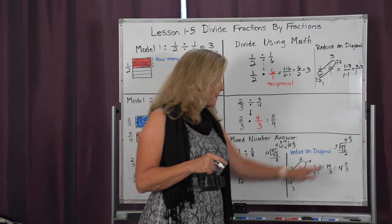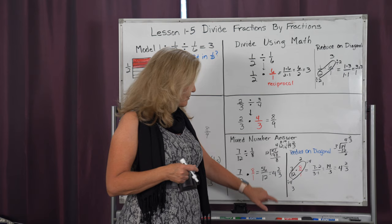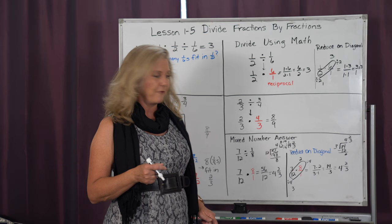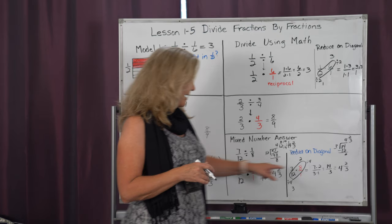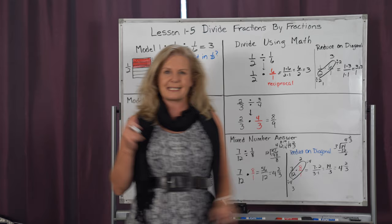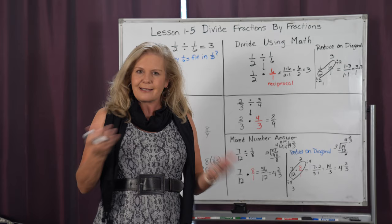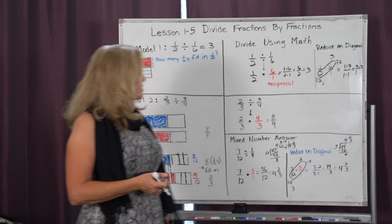If I took that same problem but this time reduced on the diagonal, I can divide both eight and twelve by four, giving me a new numerator and denominator. Now I'm just doing seven times two is fourteen, three times one is three — much smaller numbers. Three goes into fourteen four times with two-thirds left over. Same answer! That's the beauty of math — you can solve things in different ways and still get the same answer. You get to choose which method you like best. I think that about does it for division of fractions. It's up to you now. Good luck — I hope you go have some fun with math!